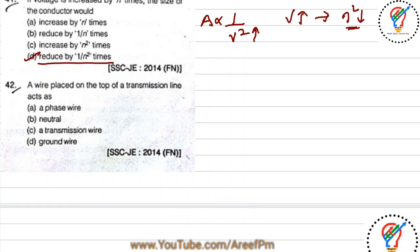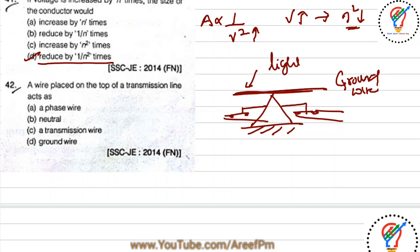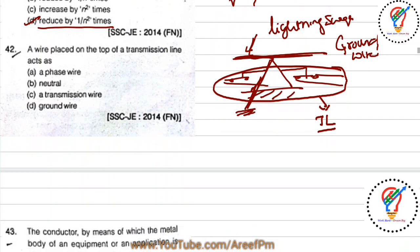Question 42: a wire placed on top of a transmission line — so here we have conductors carrying phase A and phase B. On top of the transmission line there is a ground wire. The purpose of this wire is to protect the transmission line when electrical surges occur, such as lightning surges. The surge travels through this path to the ground, not into the transmission lines.